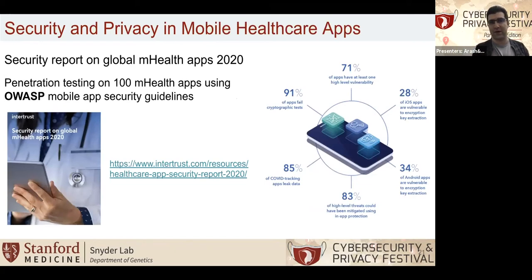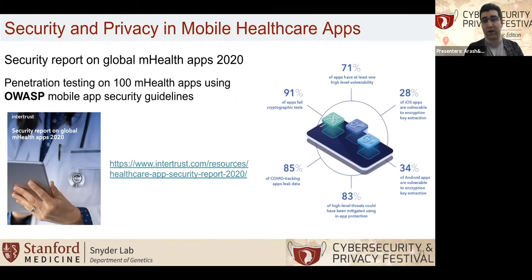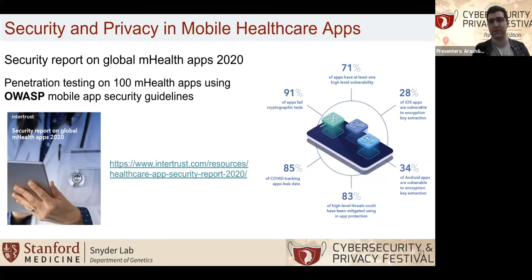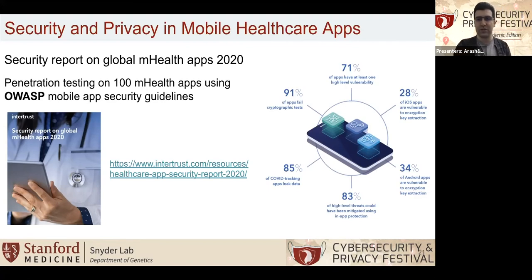As the mobile healthcare industry constantly evolves, security and privacy vulnerabilities continue to grow fast. A very recent study — published just a few weeks ago — conducted penetration testing on 100 mobile healthcare applications using the OWASP security guideline and found very serious vulnerabilities. For example, 91% of apps fail cryptographic tests, and 85% of COVID tracking apps leak some sort of data. These are really interesting results showing the importance of penetration testing as the only way to find potential vulnerabilities.